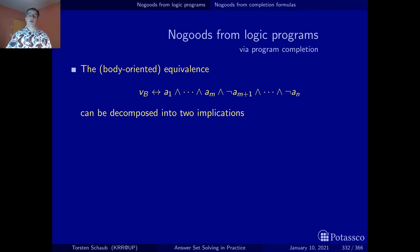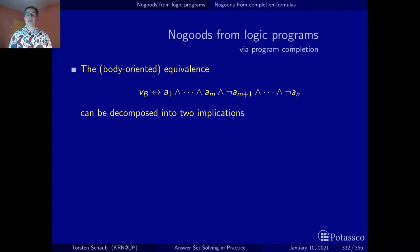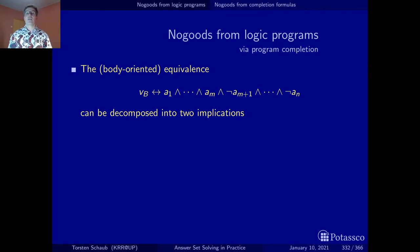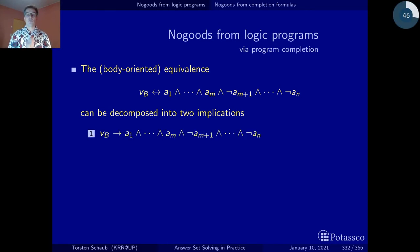So here again is what I call a body-oriented equivalence, which says that a body is true if and only if the conjunction of all positive and negative body literals holds. Keep in mind that an equivalence like this is a bi-directional implication from one side to the other and back. What we will do is decompose this equivalence into both implications. The first one says: if the body is true, then all the body literals must hold.